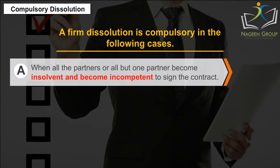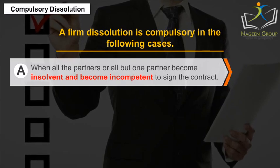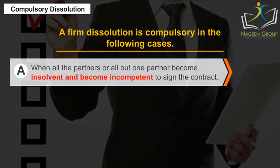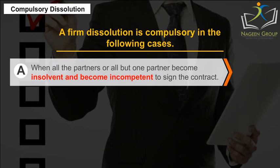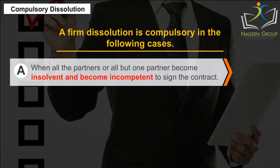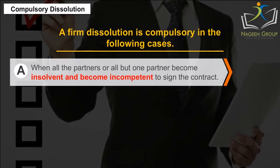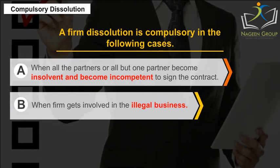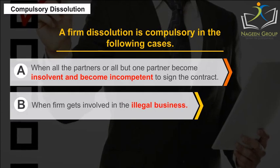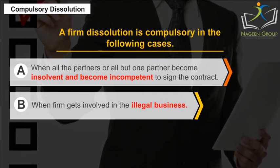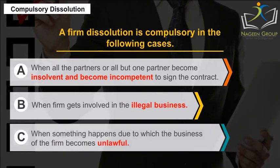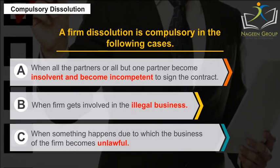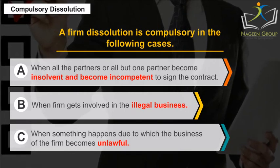A. When all the partners or all but one partner become insolvent and become incompetent to sign the contract. B. When the firm gets involved in illegal business. C. When something happens due to which the business of the firm becomes unlawful.